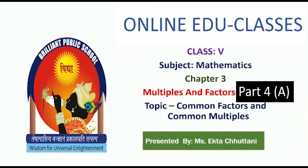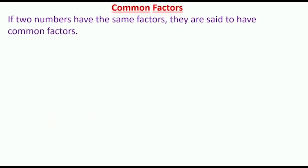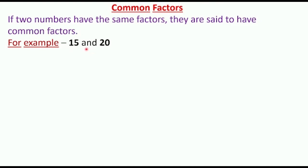Welcome to online classes, children. Today in chapter number three, Multiples and Factors, we are going to learn common factors and common multiples. First, let's see what are common factors. If two numbers have the same factors, they are said to have common factors. Here I have taken an example: 15 and 20.